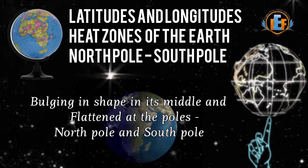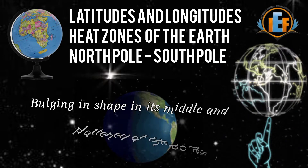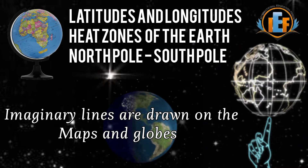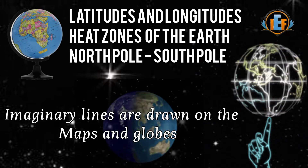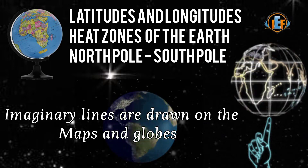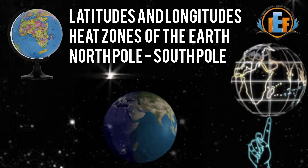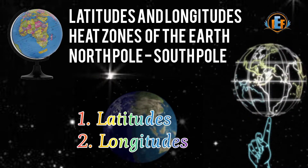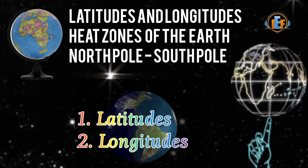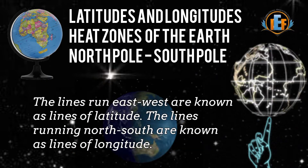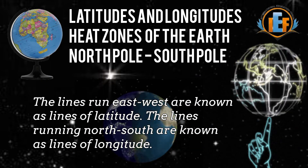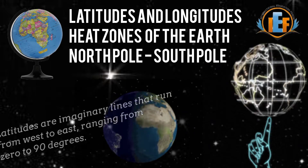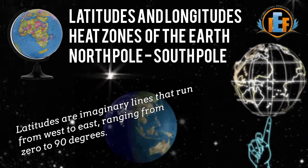For easy identification and understanding of the globe, imaginary lines are drawn on the maps and globes. These imaginary lines drawn on the maps and globes are called latitudes and longitudes. Latitudes run from east to west, each line representing a degree, with 90 degrees on the eastern side of the globe.